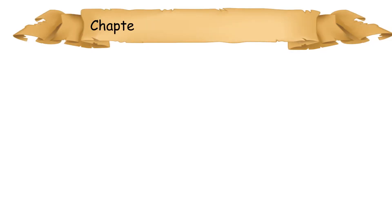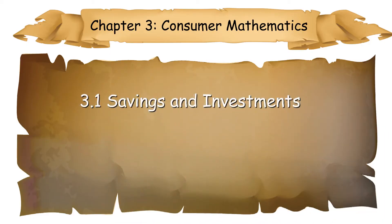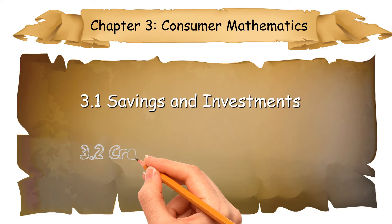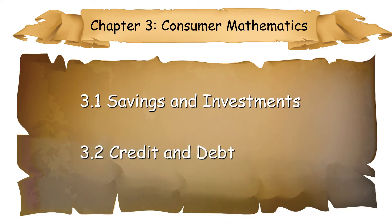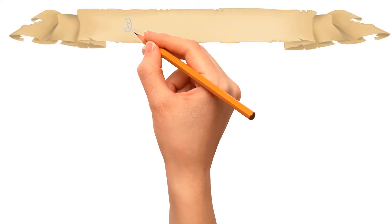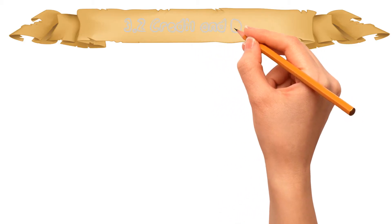Hi, I'm Teacher Daisy. Now let's learn Form 3 Chapter 3 Consumer Mathematics. In this chapter, you will learn 3.1 Savings and Investments and 3.2 Credit and Debt. In this video, we will learn 3.2 Credit and Debt.